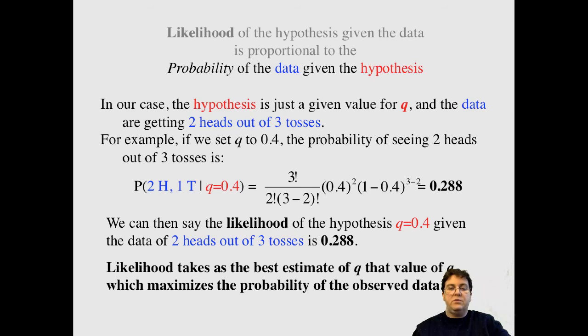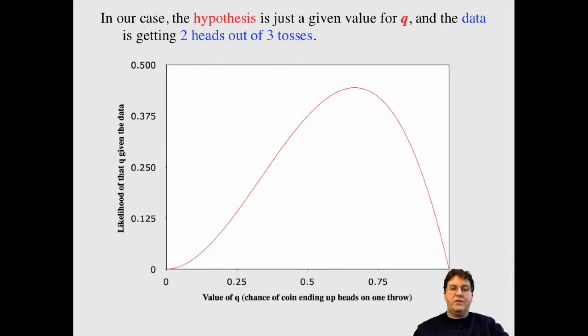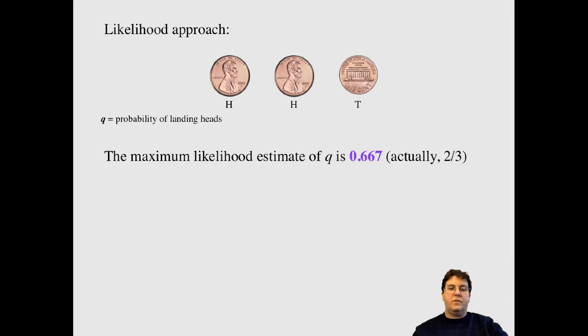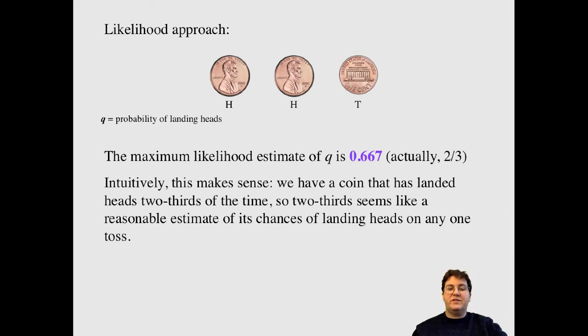And so likelihood takes as the best estimate of q, that q that maximizes the probability of the observed data. So the way I could do that, I could try a value of 0.5 in that formula, plug and chug. I could differentiate it and find the maximum. There's various approaches I could do to infer what that best q is. Just looking at the plot of it. Right here, we see a nice smooth curve. And there's our value of 0.4. That's 0.4 on the x-axis. Leads to the observed likelihood of 0.288 on the y-axis. And so we can figure out where the maximum is. And in our case, it's up here. And that goes down to 0.667. So that's our maximum likelihood estimate of q is 0.667.